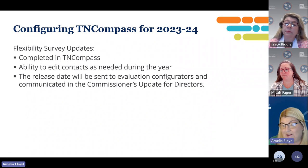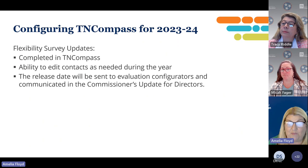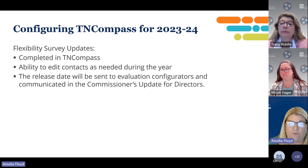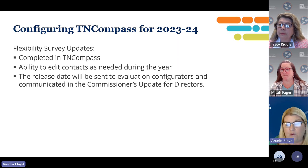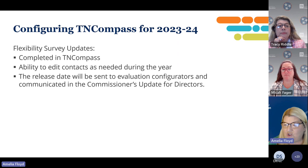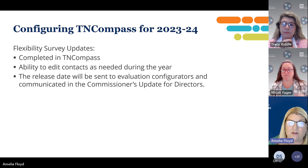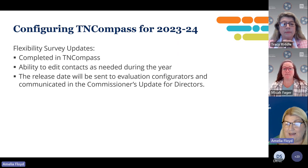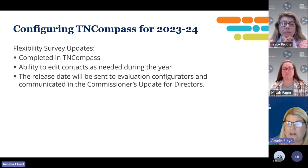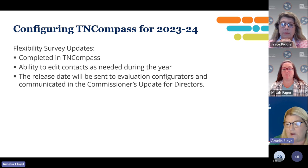Configuring T and Compass for the 2023-24 school year is something most of you will probably do. In order for us to configure T and Compass, you have to complete a flexibility survey. The flexibility survey will go out sometime end of June or the 1st of July. This year, instead of a form stack, it will be completed in T and Compass. Districts will have the ability to edit contacts as needed during the school year. We will send the release date to evaluation configurators and it will also be communicated in the commissioner's update for directors, so be watching that.